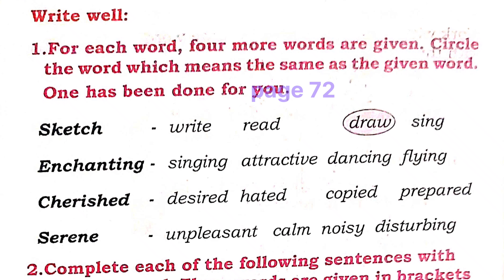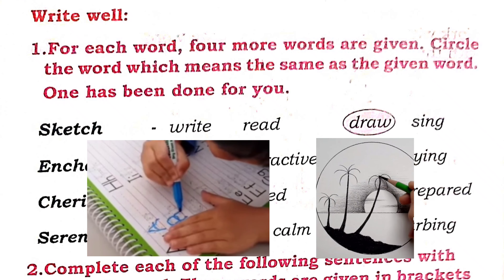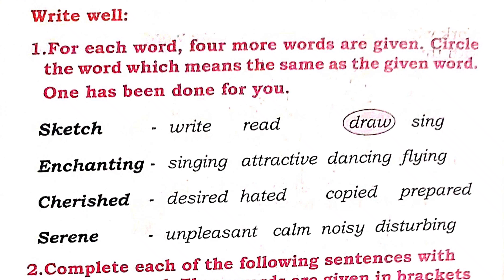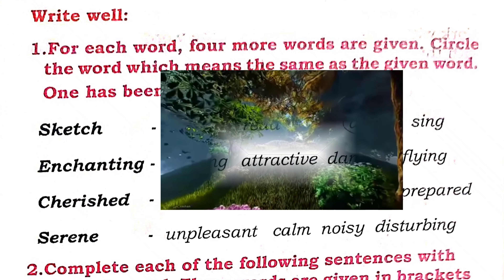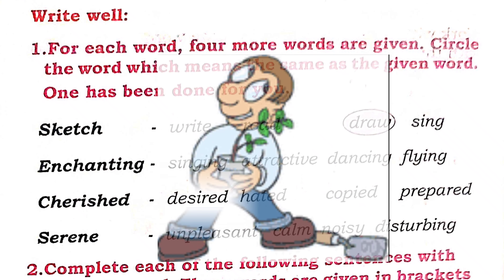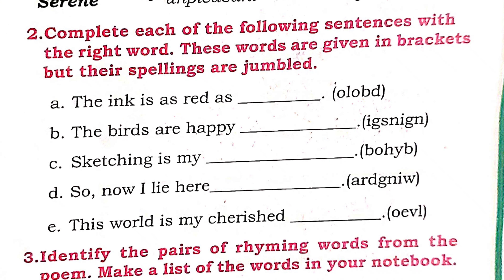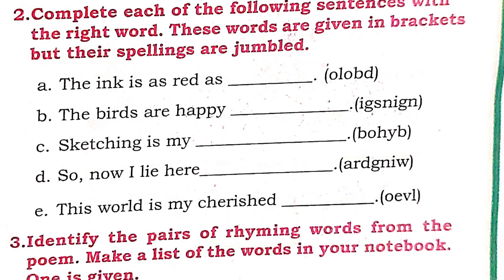Write well. For each word, four more words are given. Circle the word which means the same as the given word. One has been done for you: Write, Draw, Read, Sing. Enchanting means Delightful, Charming, Attractive. Cherished means Desired.